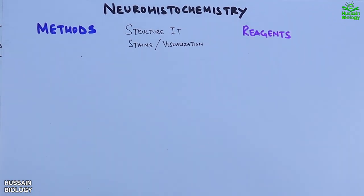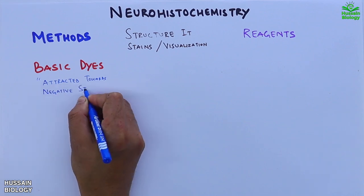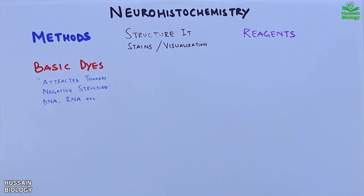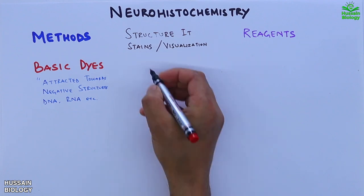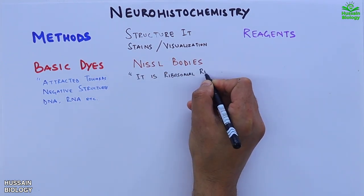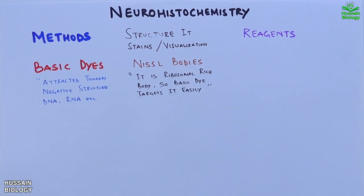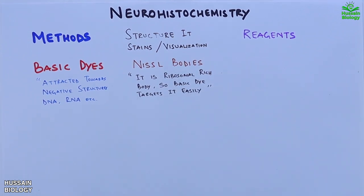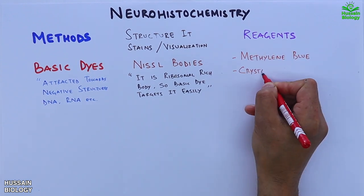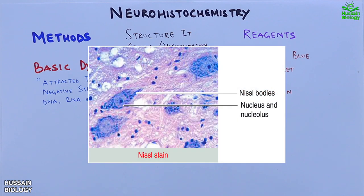First we have the basic dyes. These dyes are attracted towards negatively charged structures like DNA and RNA. In the case of neuronal structures, these basic dyes stain the Nissl bodies. Nissl bodies are ribosome-rich bodies, so basic dyes target them easily. The reagents used in the basic dye method include methylene blue, crystal violet, thionine, and hematoxylin. In this diagram we can see the Nissl bodies shown in dark blue color.